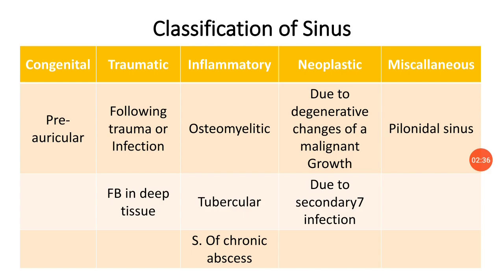The second category is traumatic sinus, which can occur following any trauma or infection. Due to trauma, foreign bodies get deep-seated in the tissue, acting as an irritant, causing tissue reaction and infection, and the sinus persists. Third is inflammatory sinus, due to causes like osteomyelitis, tubercular sinus, and chronic abscess. Fourth is neoplastic sinus, due to degenerative changes of a malignant growth or secondary infection in malignant growth.